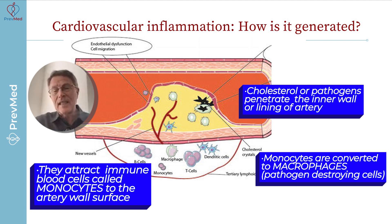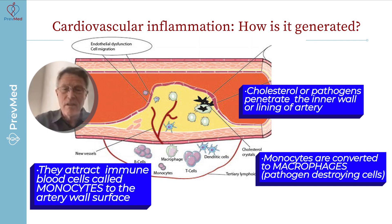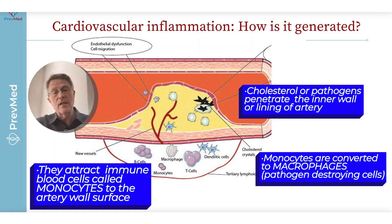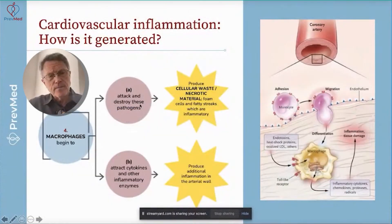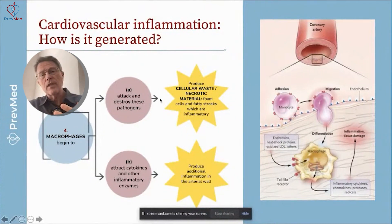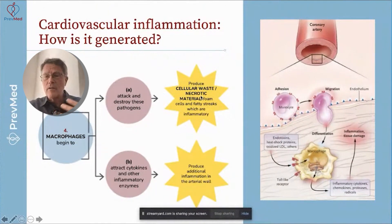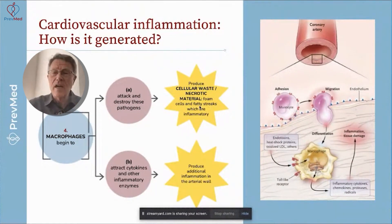They start releasing enzymes to liquefy, digest, or recycle this cholesterol. They also start to release things called cytokines. Part A is they attack and destroy the pathogen or the cholesterol. They produce what we call cellular waste — necrotic material. Necrotic material is dead or material that's being recycled by your immune system.